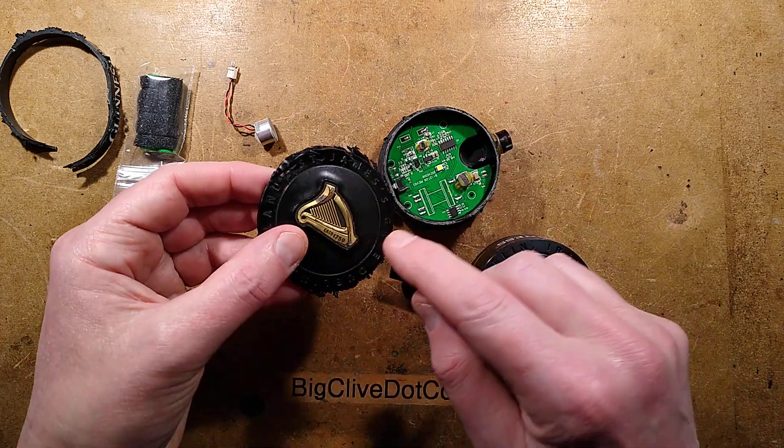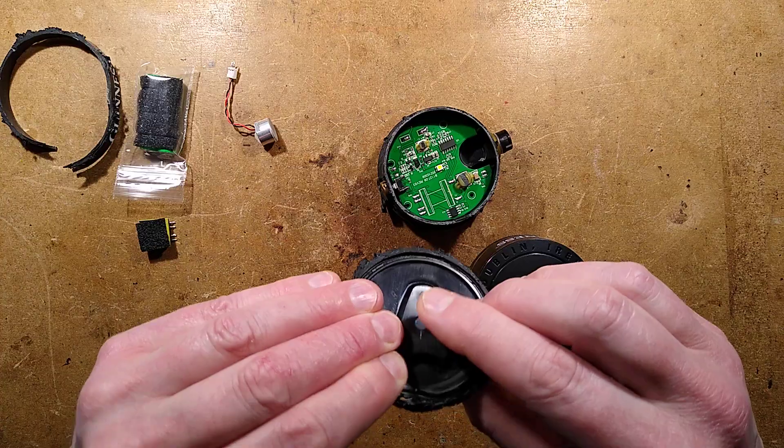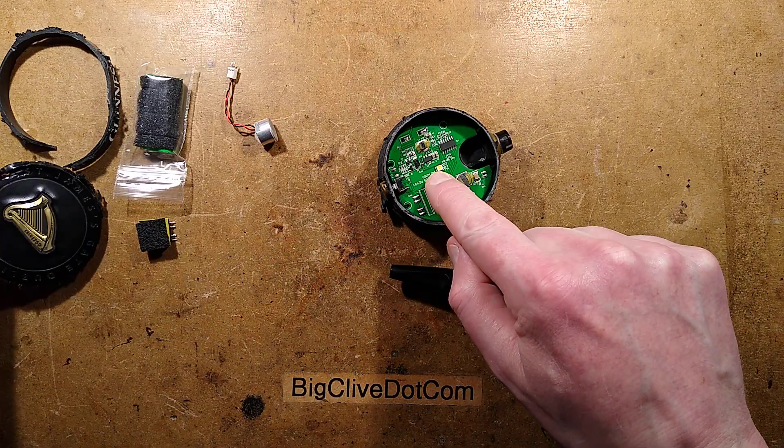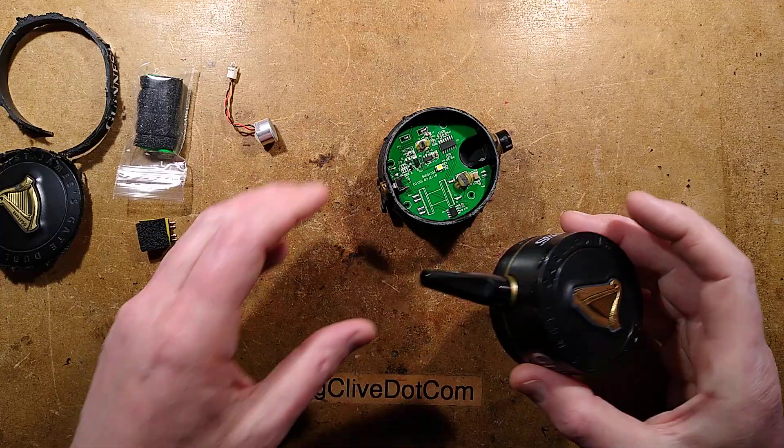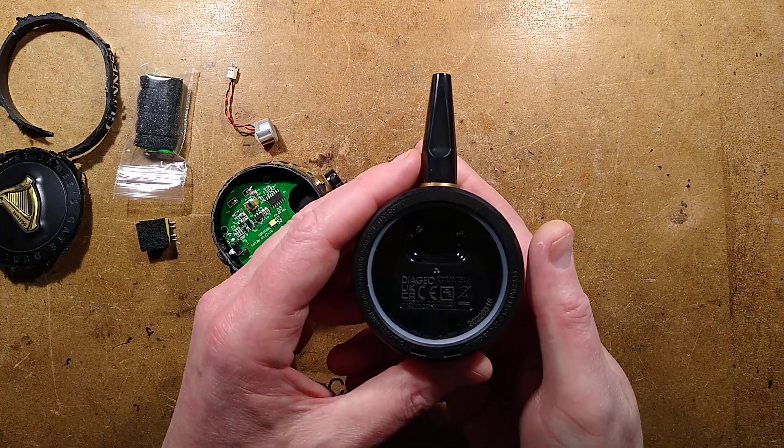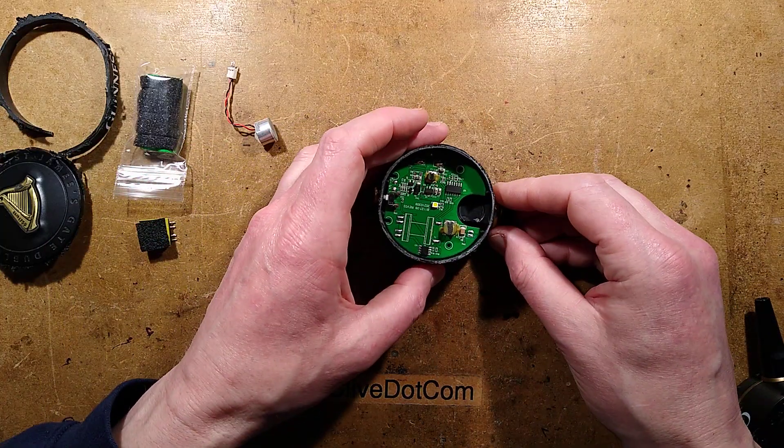The top itself has the Harp logo with a diffused optical light guide going up to it, powered by a red and white combined LED. I didn't realise that Guinness is part of the Diageo group. Interesting. Diageo are an enormous liquor company.